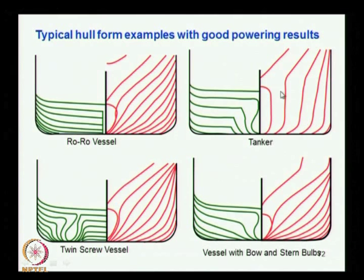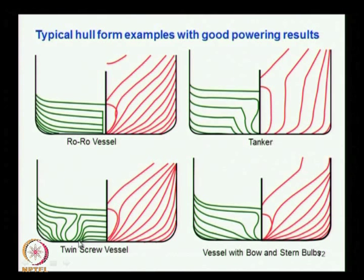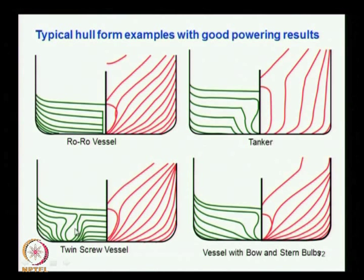For single screw vessels there is one type, and for twin screw vessels there are two types — one which just pierces through the hull, and for larger shapes the twin screw contour forms part of the body to get better flow conditions. The ship itself takes a form to accommodate the shaft for the twin screw. The form gets modified drastically in that region, making construction more difficult.